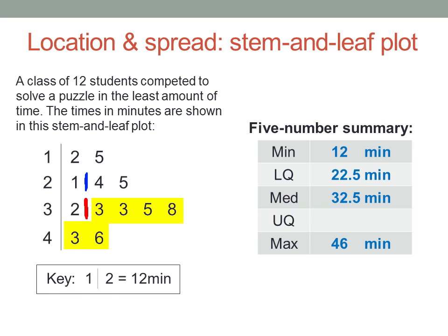And in the same way, locate the upper quartile by finding the median of the upper half, in this case between the ninth and tenth scores, thirty-six and a half.